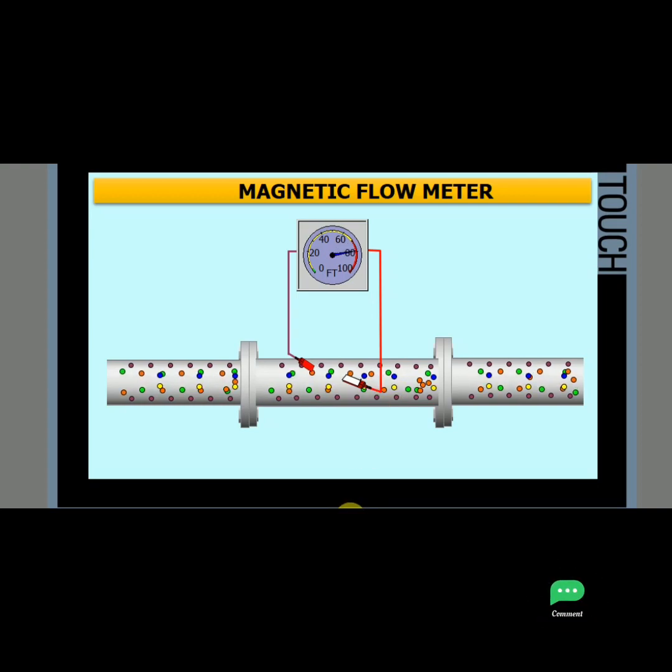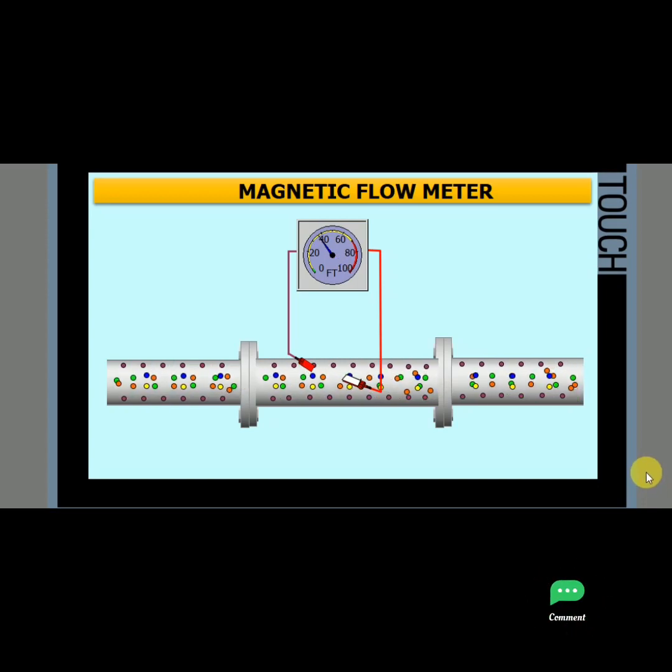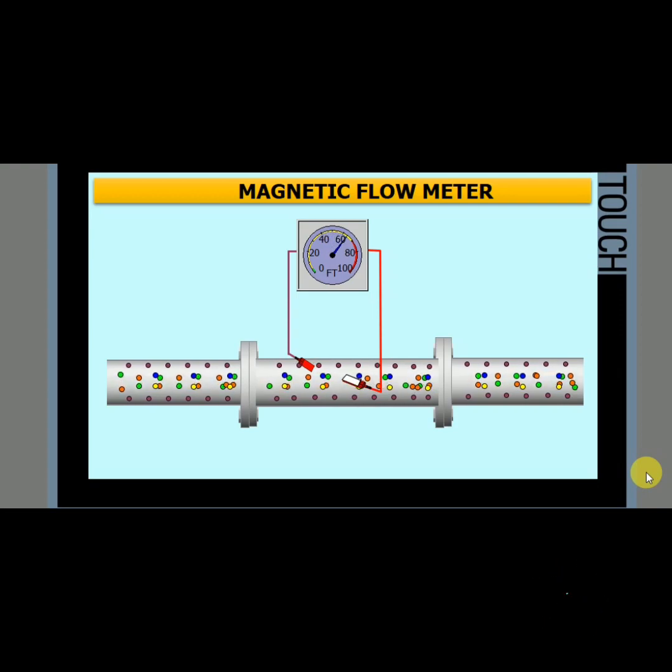Mag meters are typically full bore sensors, meaning that the internal flow path is of the same diameter as the upstream and downstream connections. This construction eliminates any restriction of the fluid which may alter the flow path or create a pressure drop. Fluid passes through the mag meter in a straight line through the bore of the sensor.